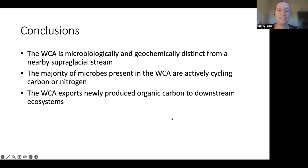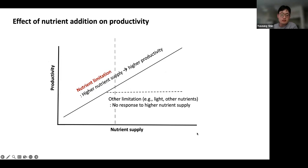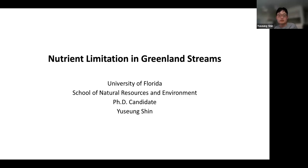To summarize: the weathering crust is microbiologically and geochemically distinct from the superglacial stream; the majority of microbes present are actively involved in carbon or nitrogen cycling; and the weathering crust likely exports a meaningful amount of organic carbon to downstream proglacial ecosystems, making it a significant carbon source in an otherwise low-productivity environment. Now I'll hand off to Yusung, who will talk about nutrient limitation in Greenland streams focusing on deglaciated systems.